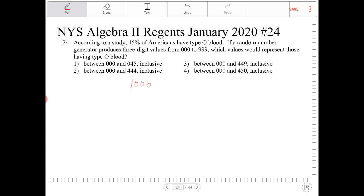And we want to assign each one of these 1,000 people with a number. And we want to find potentially how many of these numbers will represent those having type O blood. In other words, we want 45% of these 1,000 people.